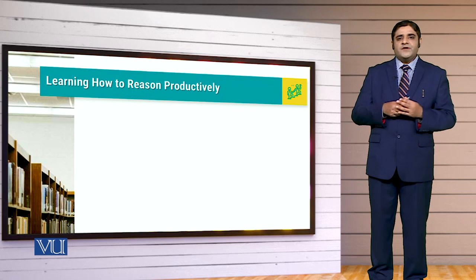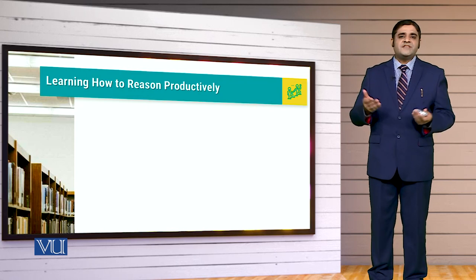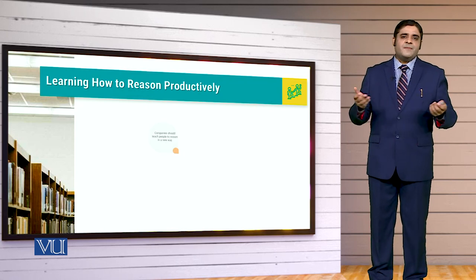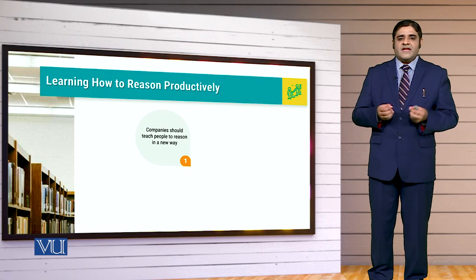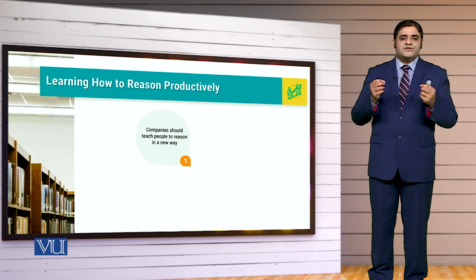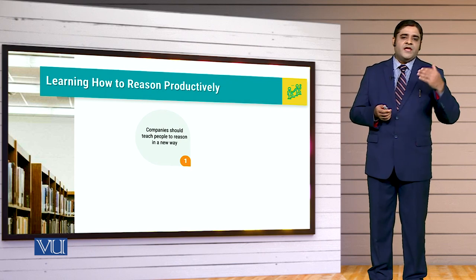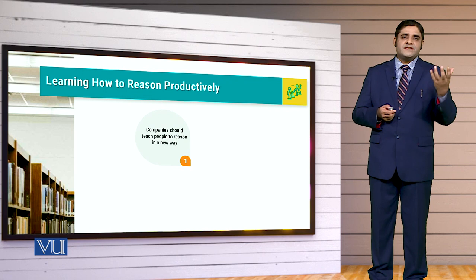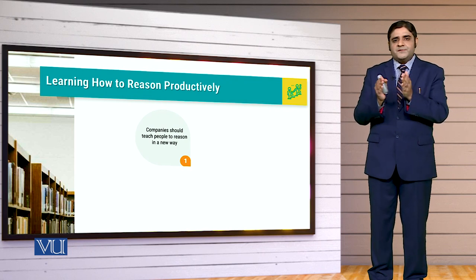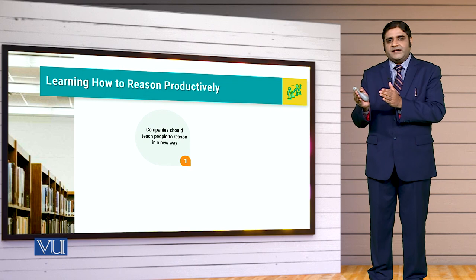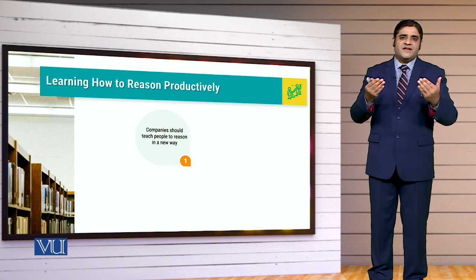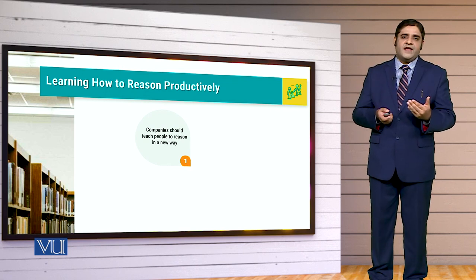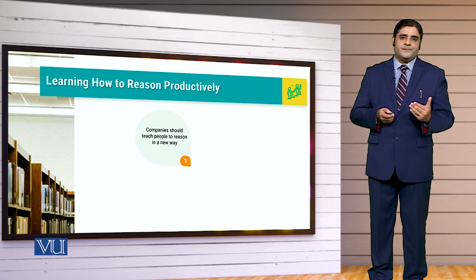When we are talking about learning how to reason productively, this is an important thing. Companies should teach people to reason in a new way. People have to do the logic and provide explanations for why they perform a job and do it. The organization also sets its objectives and targets, and new perspectives and new avenues will be the responsibility of the organization.